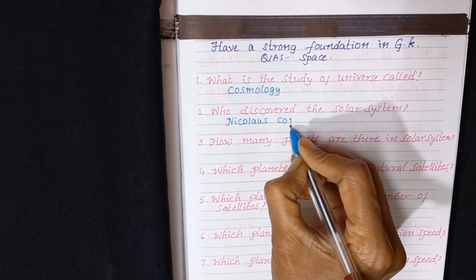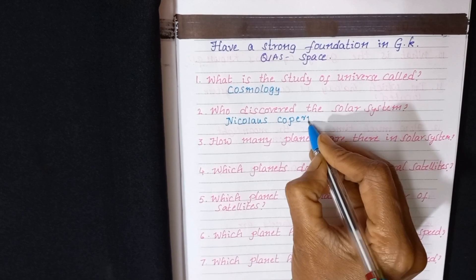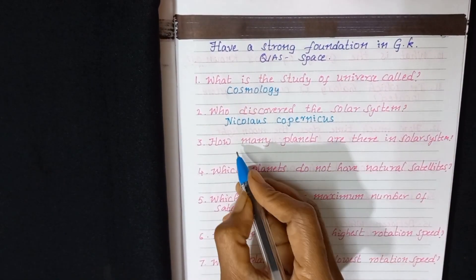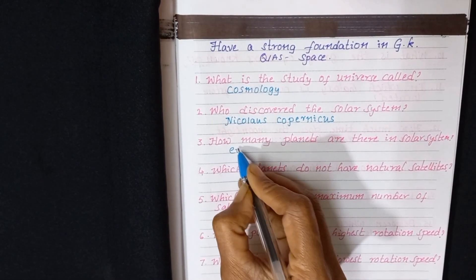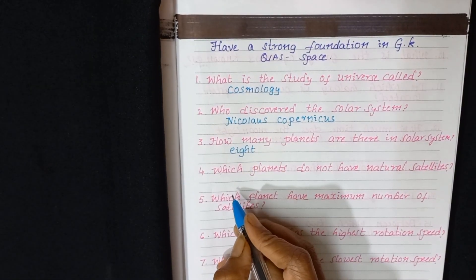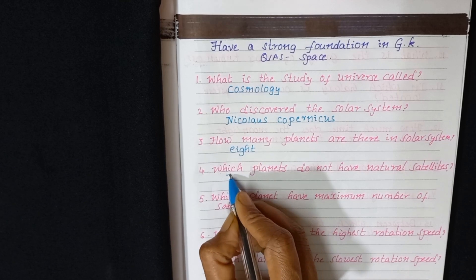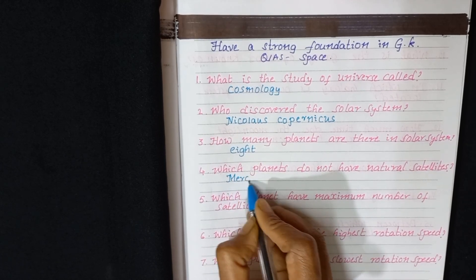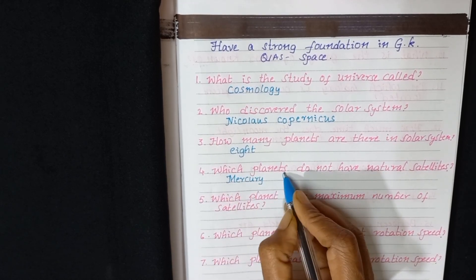How many planets are there in solar system? Eight. Which planets do not have natural satellites? Mercury and Venus.